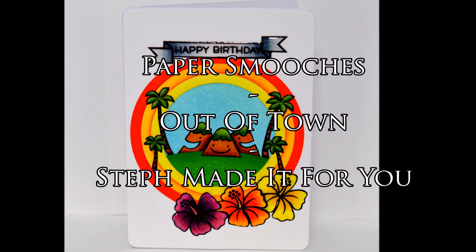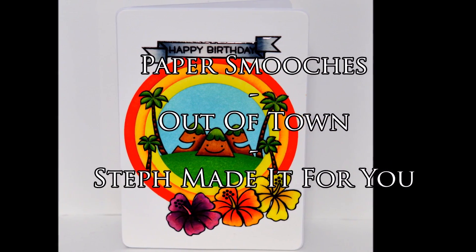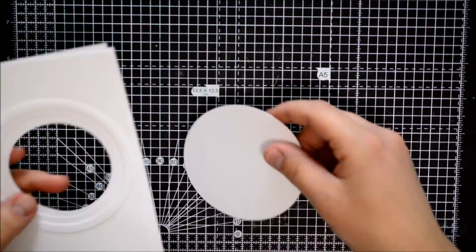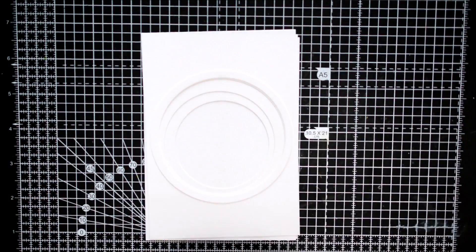Today I'm sharing with you another card I made using this Paper Smooches stamp set called Out of Town. It's a holiday, bright color, summery card and I was inspired by fellow Instagrammers for the design.